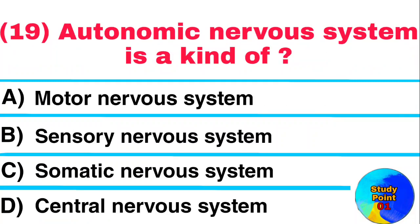Question: Autonomic nervous system is a kind of? Answer: Motor nervous system.